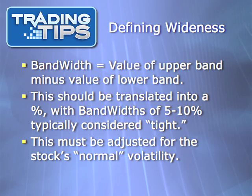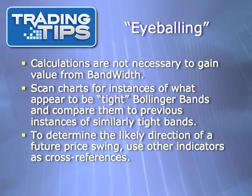However, even this is relative, as some stocks are more typically volatile than others. So Bollinger Band Width needs to be adjusted for the stock's normal volatility. This may sound overly complex, but the reality is that Bollinger Band Width is one of the easiest technical indicators to simply eyeball. You don't really need to do the calculations — they are just good to know as a starting point. Instead, you can scan charts for instances of what appear to be tight Bollinger Bands.